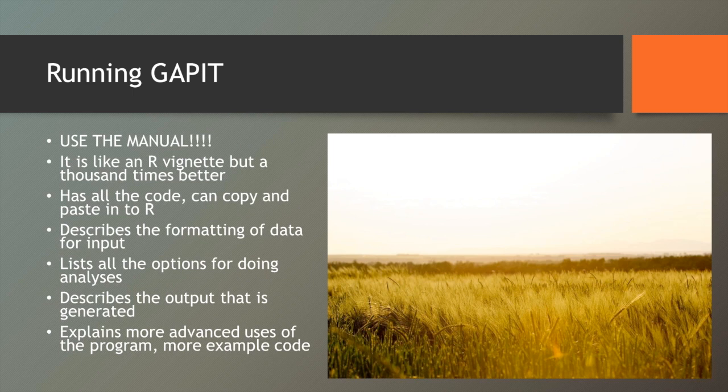The manual also describes the output that's generated. Because it's in R, GAPIT has the ability to create a lot of graphs and generates a lot of the output you want — like Manhattan plots, QQ plots, and allelic effect estimates. And finally, the manual towards the end explains some more advanced features of the program, which we might also touch on in the demo.